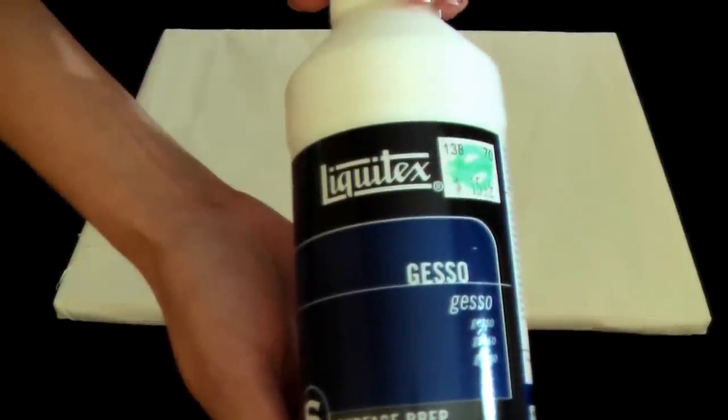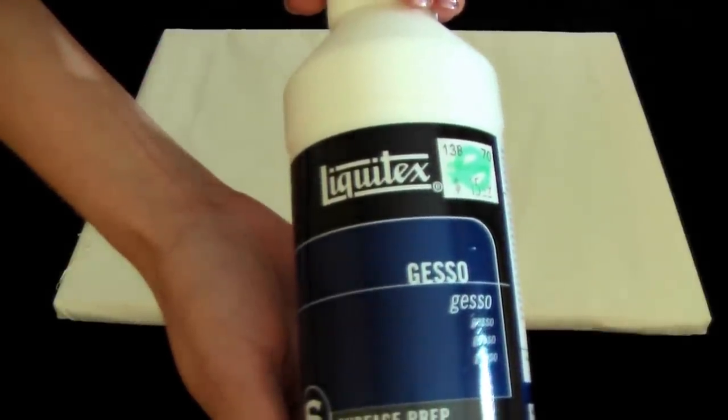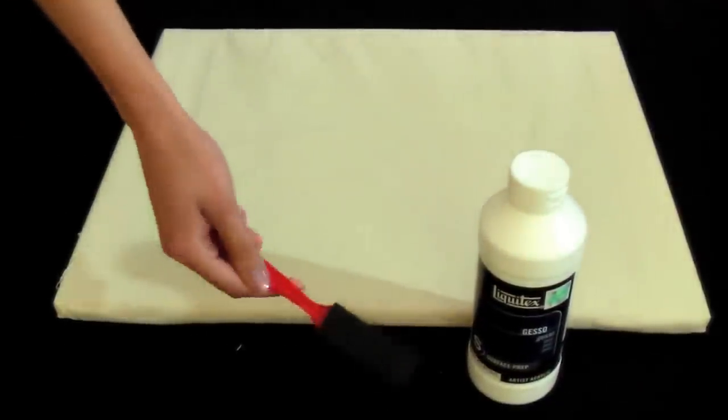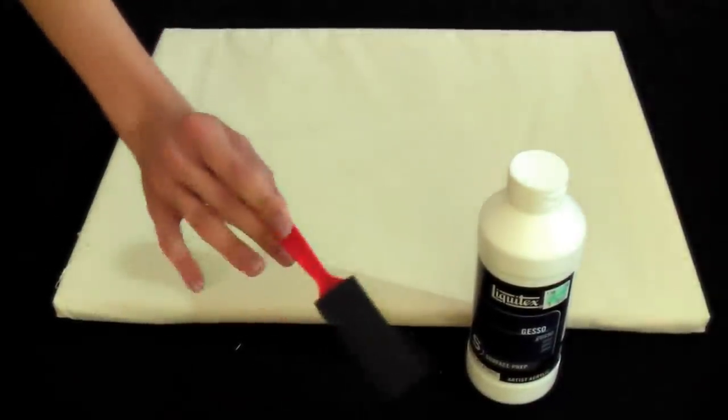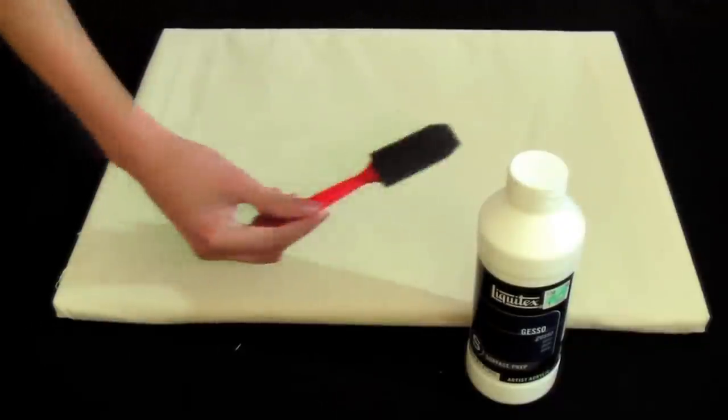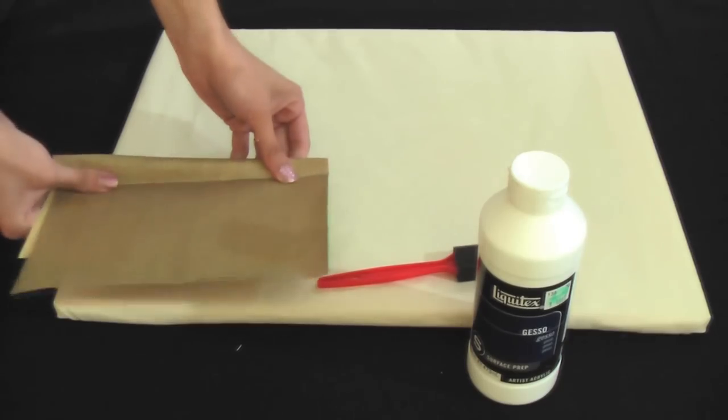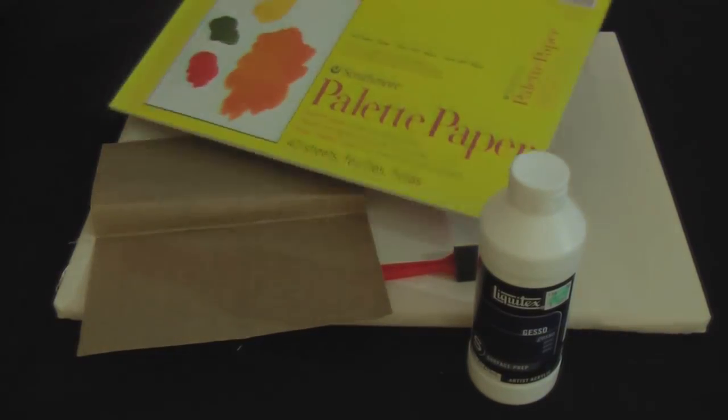To prime the canvas you made, you're going to need acrylic based gesso, a brush. I'm using a sponge brush but any paint brush will do. Sandpaper and palette paper. Okay, let's get started.